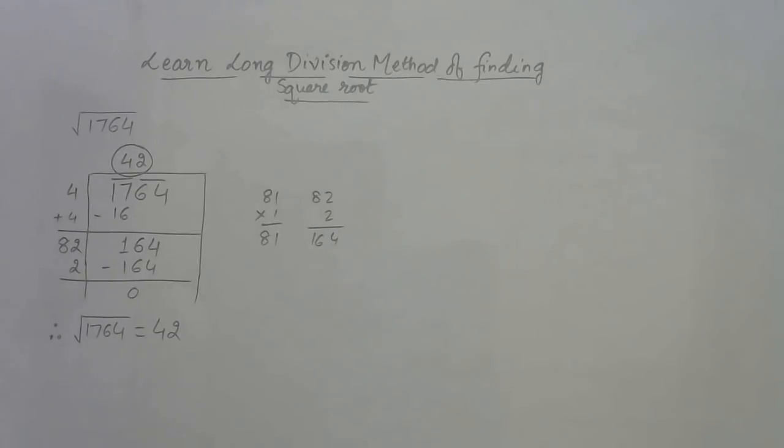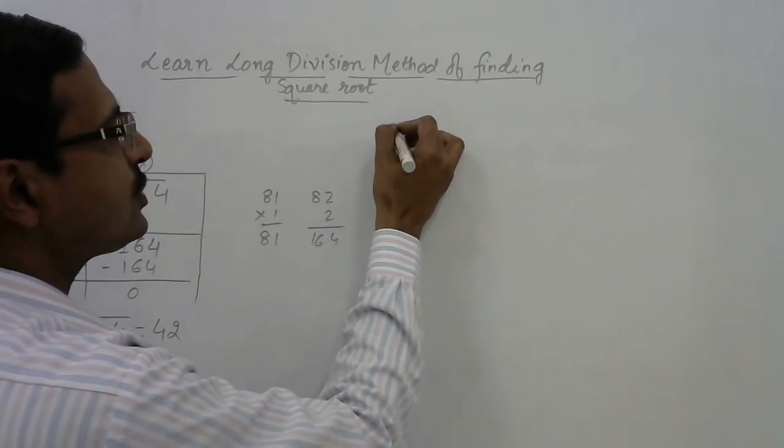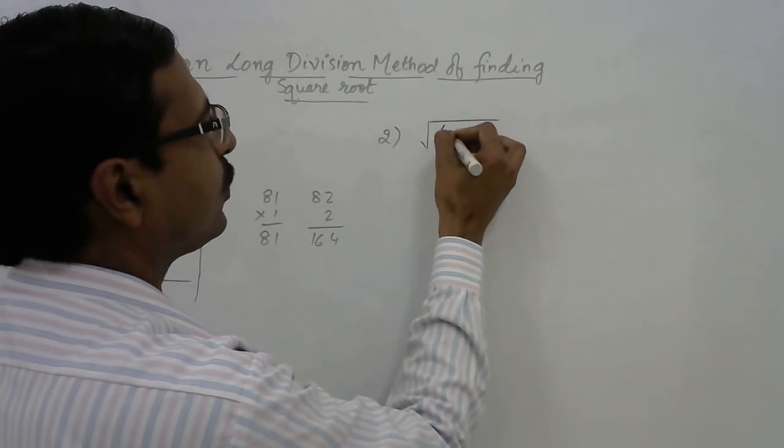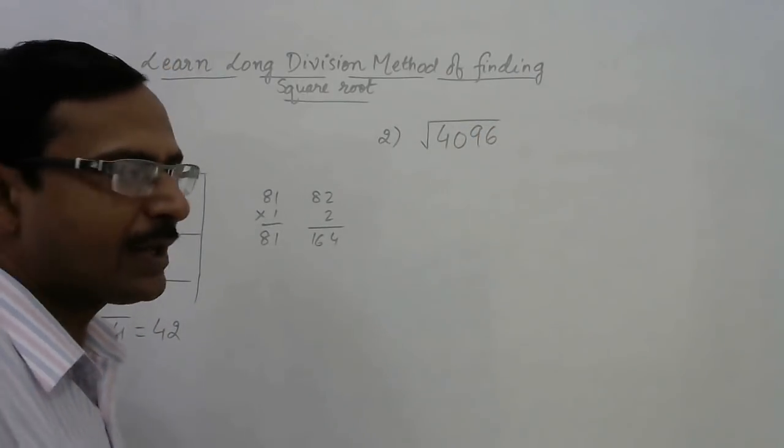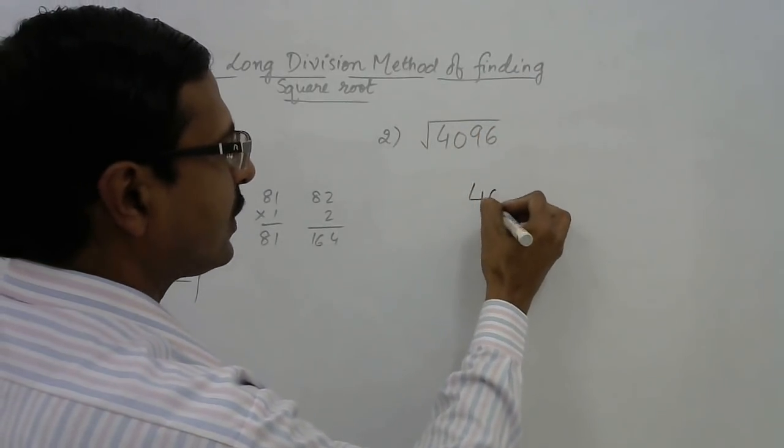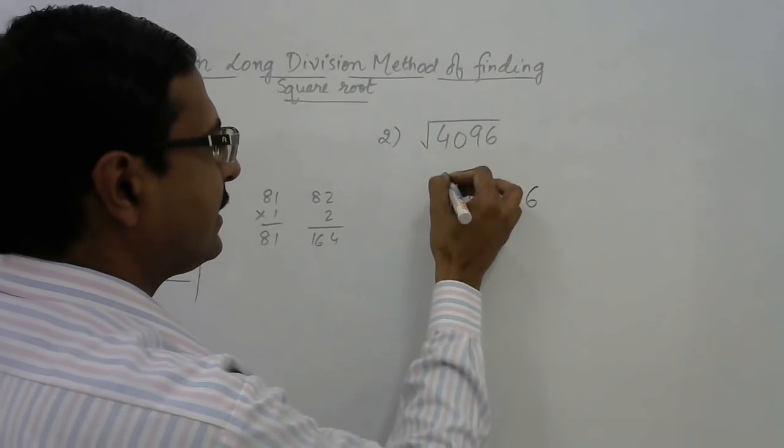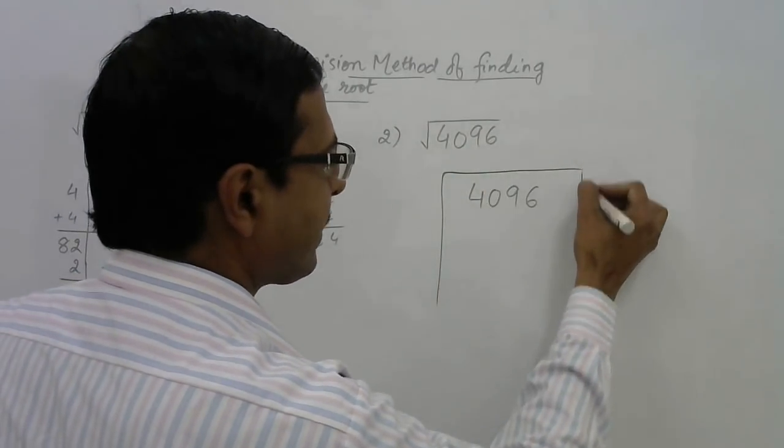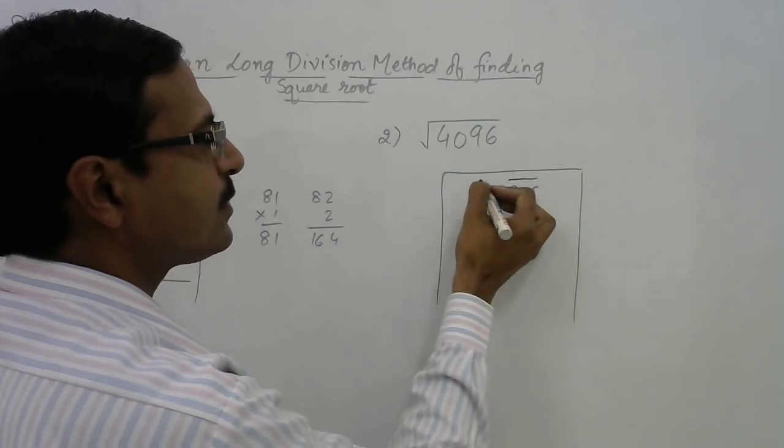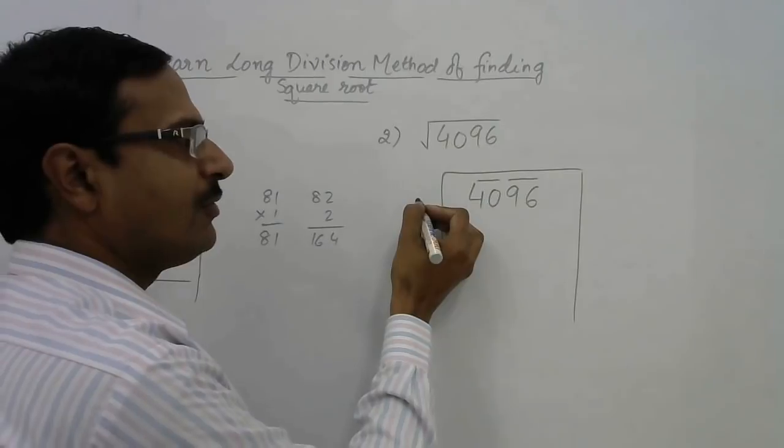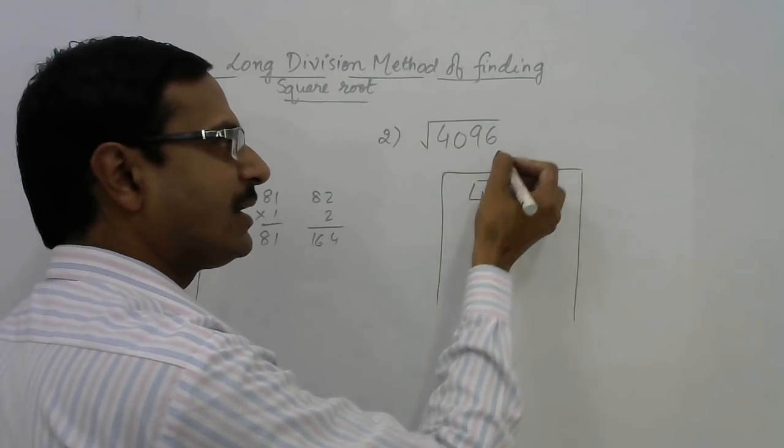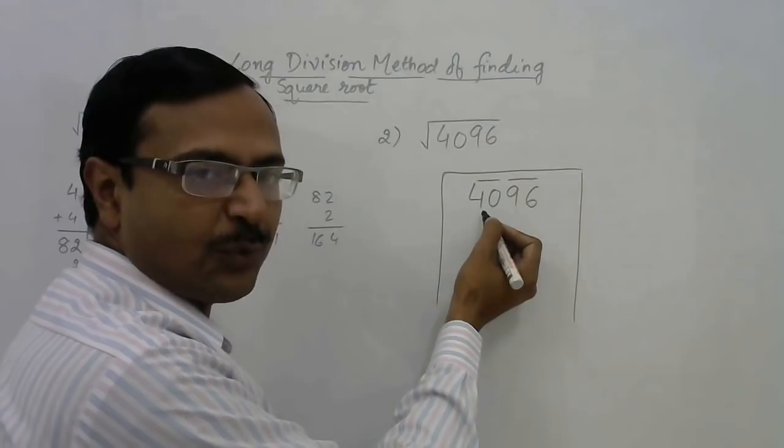In the first attempt this method looks a little bit difficult, but when you solve 5 or 6 problems of this kind, the method will be easier. Let's have one more question: suppose you need to find the square root of 4096. Write it like this and make pairs from the right hand side—96 is first pair, 40 is second pair.